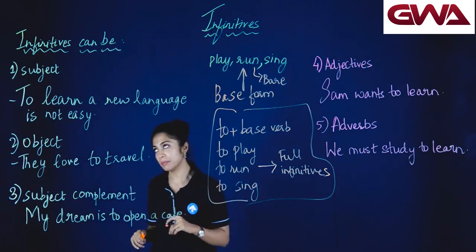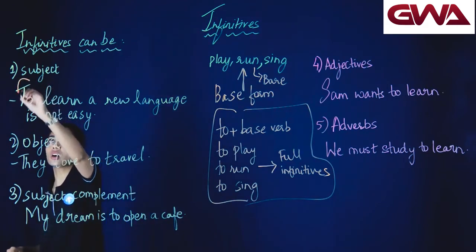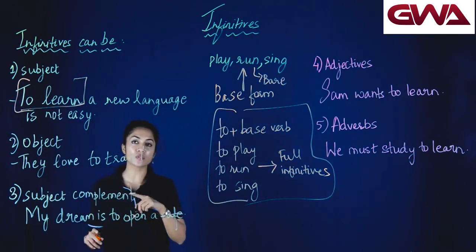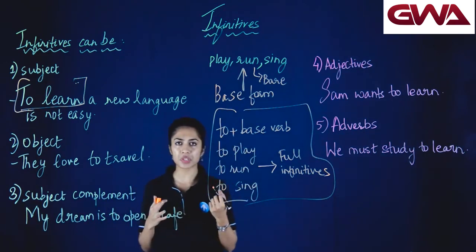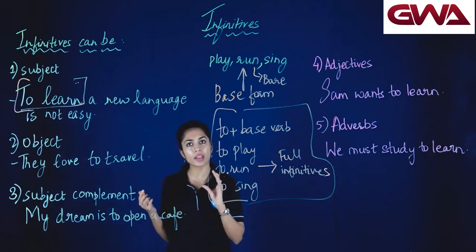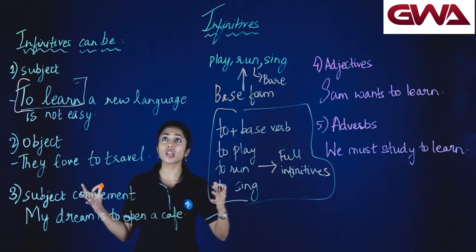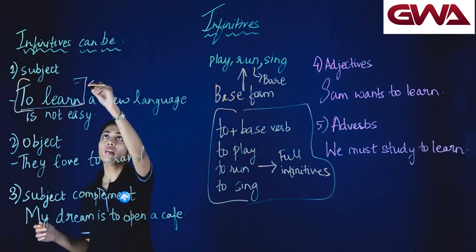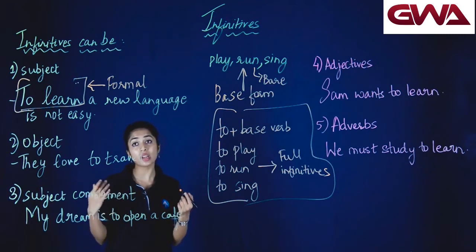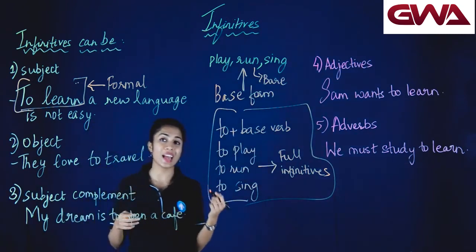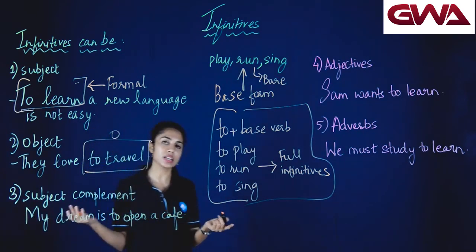Infinitives can be the subject of a sentence. For example: to learn a new language is not easy। यहाँ पे to learn subject position में है — and this is our infinitive। लेकिन जभी infinitive subject position में होते हैं, वो थोड़ा formal way होता है। Normally मैं कहूगी: learning a new language is not easy। Infinitives can also be the object in a sentence — like, they love to travel। They love what? They love to travel — to travel is our infinitive and it becomes the object।